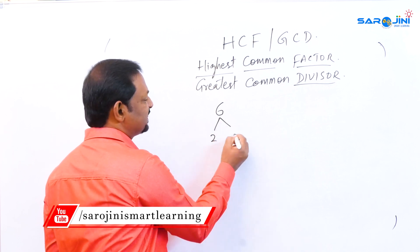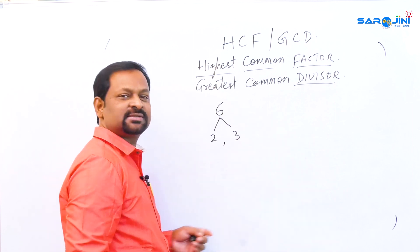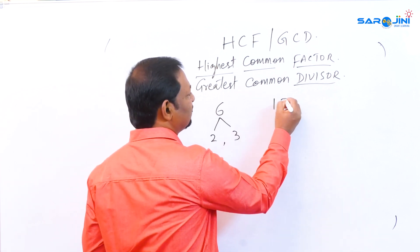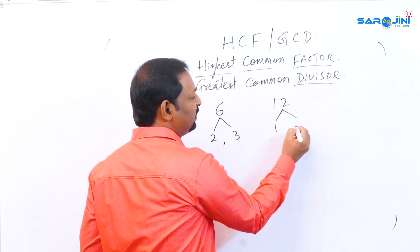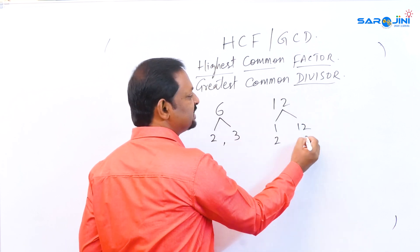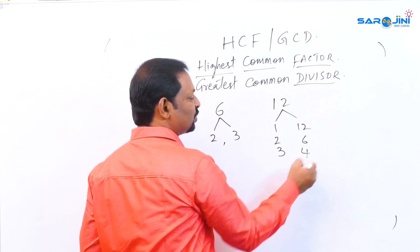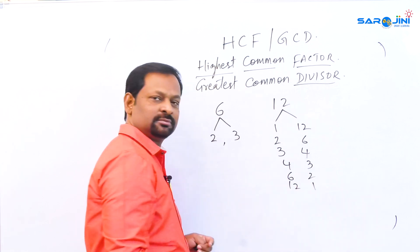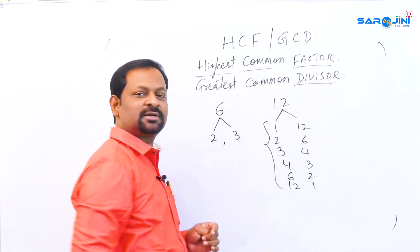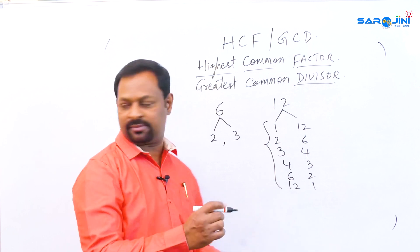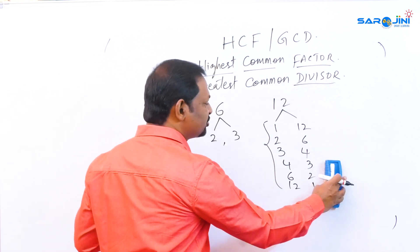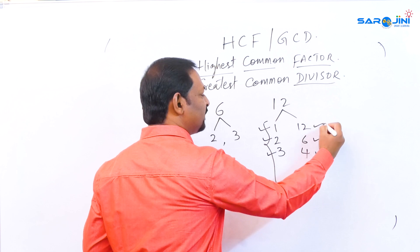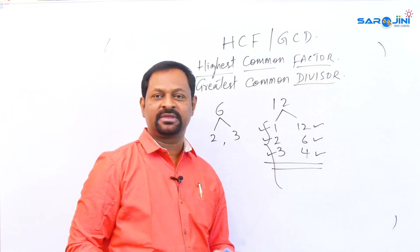Suppose I take 6 — the factors of 6 are 2 and 3, because 2 times 3 is 6. Similarly, if I take 12, then 2 times 6 is 12, 3 times 4 is 12, 4 times 3 is 12, 6 times 2 is 12, and 12 times 1 is 12. So the factors of 12 are 1, 2, 3, 4, 6, and 12.